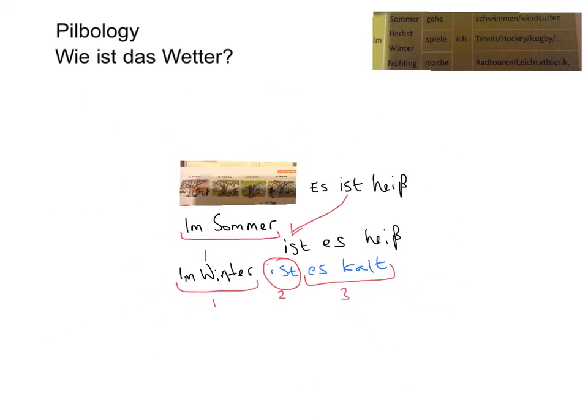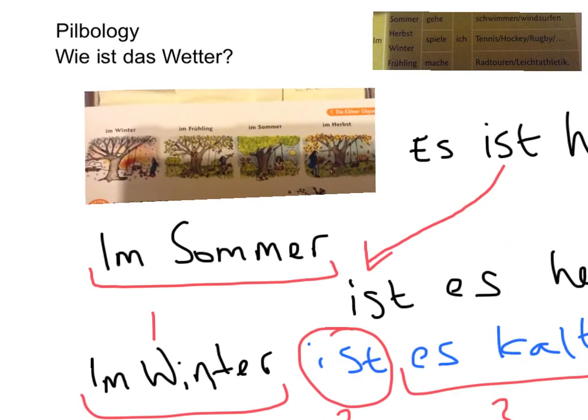So, what I'd like you to do is make sure that you've got written out one sentence for each of these seasons. For example: Im Winter ist es kalt. Im Sommer ist es schön oder warm oder sonnig. Im Frühling ist es kalt, oder Im Frühling regnet es - because remember the verb must be in second position. Im Frühling regnet es, oder Im Herbst regnet es, oder schneit es - although that would be in the winter when it snows.